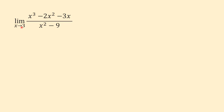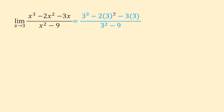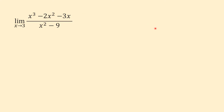First we plug in 3 for x: we have (3³ − 2(3²) − 3(3)) over (3² − 9). 3³ is 27, 3² is 9, times 2 is 18, so 27 − 18 − 9 = 0. In the denominator, 3² − 9 = 0. So we have 0/0, which means we can apply L'Hôpital's rule.